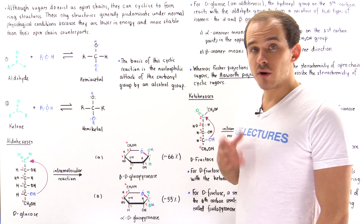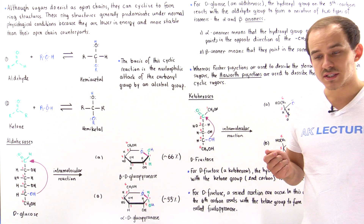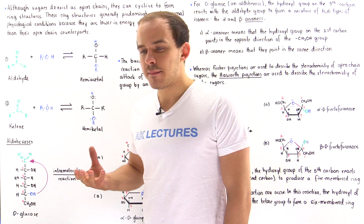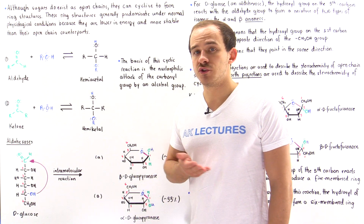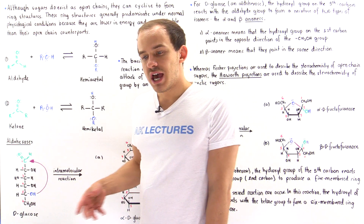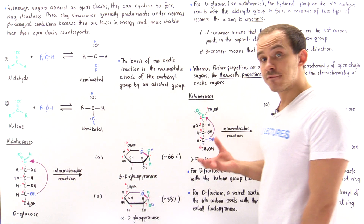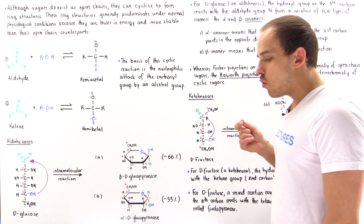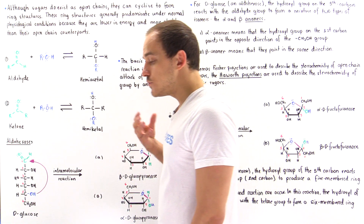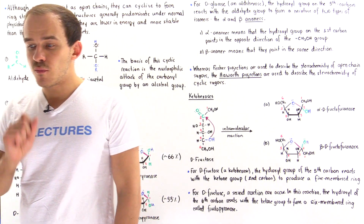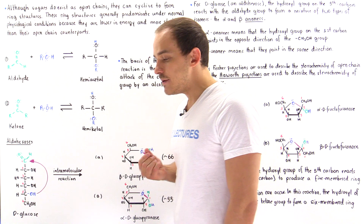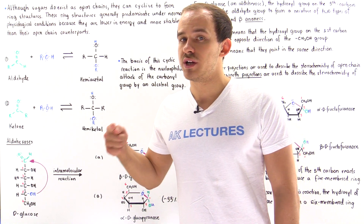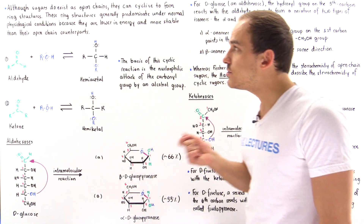So far in our discussion on carbohydrate molecules, we've focused on the open chain form of sugar. If we're examining glucose, the open chain form of glucose looks like this. And if we're examining fructose, the fructose open chain form looks like this. Although the open chain form of sugar molecules does exist to a very small extent inside our body, these open chain sugar molecules actually undergo a cyclic reaction to form ring structures.